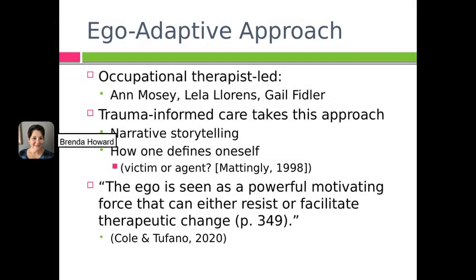The ego-adaptive approach is an occupational therapist-led approach espoused by three theorists: Ann Mosey, Lila Lorenz, and Gail Fidler. Lila Lorenz actually coined the term ego-adaptive approach. She is a Black occupational therapist theorist who has made a real difference in occupational therapy — we'll return to her in our segment on the lifespan approach. Trauma-informed care, which is quite popular right now, takes this ego-adaptive approach, recognizing that the ego can adapt. Some ways it does that include narrative storytelling and working on how one defines oneself.